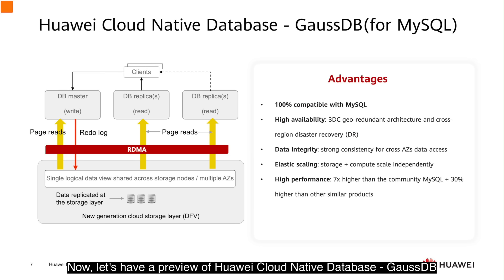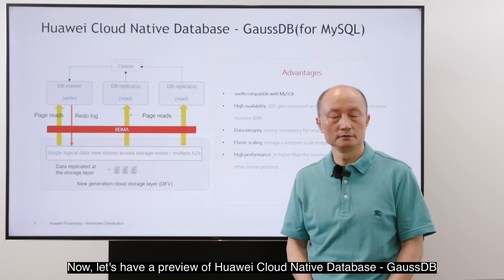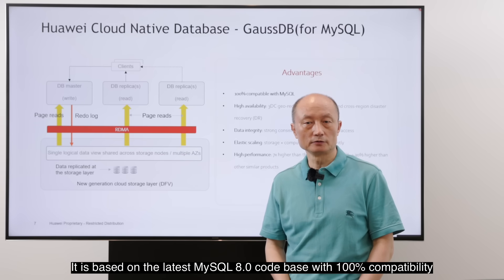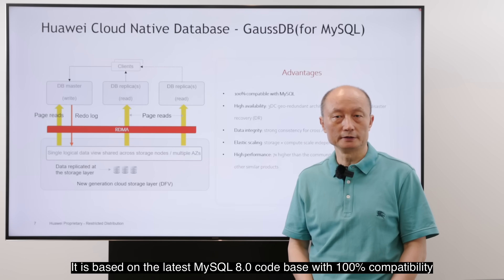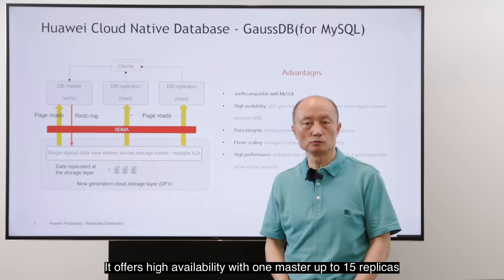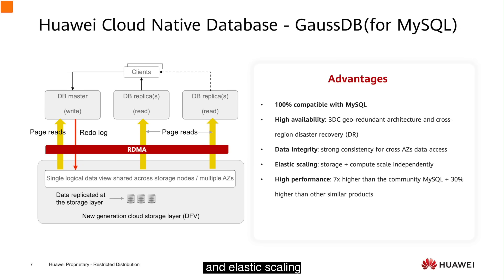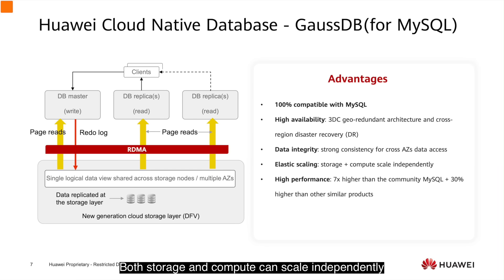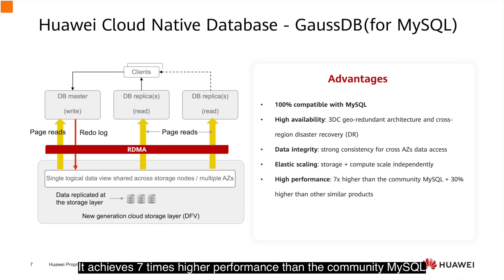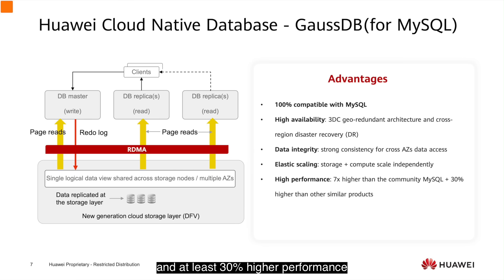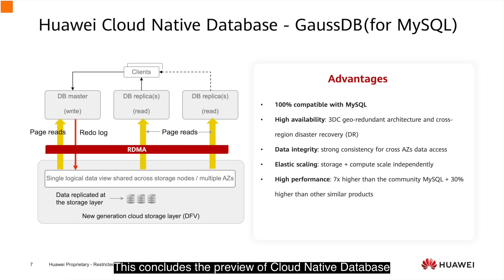Now, let's have a preview of Huawei's cloud-native database, GaussDB. It is based on the latest MySQL 8.0 code base with 100% compatibility. It offers high availability with one master and up to 15 read replicas, and elastic scaling. It is based on compute-storage separation, where both storage and compute can scale independently. Because of this innovative design, it achieves 7x higher performance than community MySQL and at least 30% higher performance compared to similar products from other cloud providers.